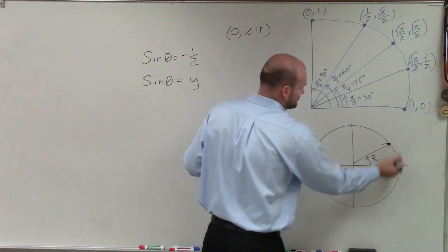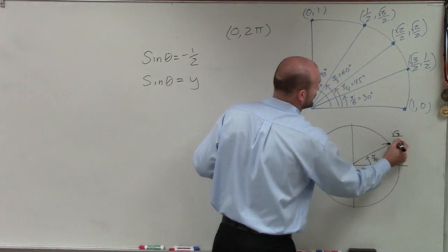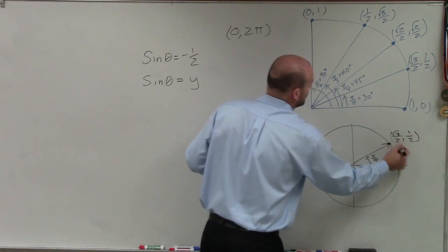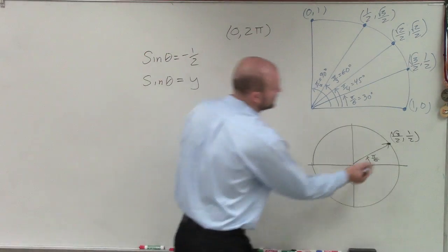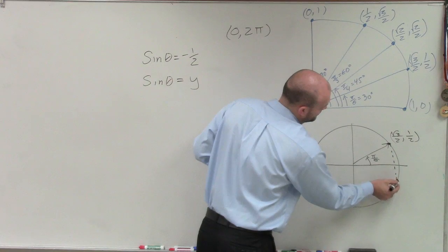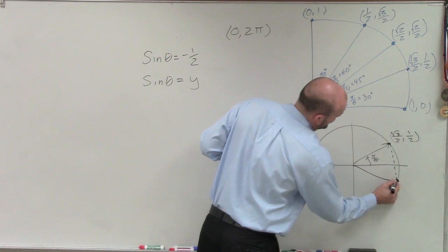So therefore, square root of 3 over 2 comma one-half. Now, for the y-coordinate to be negative, that means my y-coordinate has to be in the third and the fourth quadrant. So therefore, I need that angle.